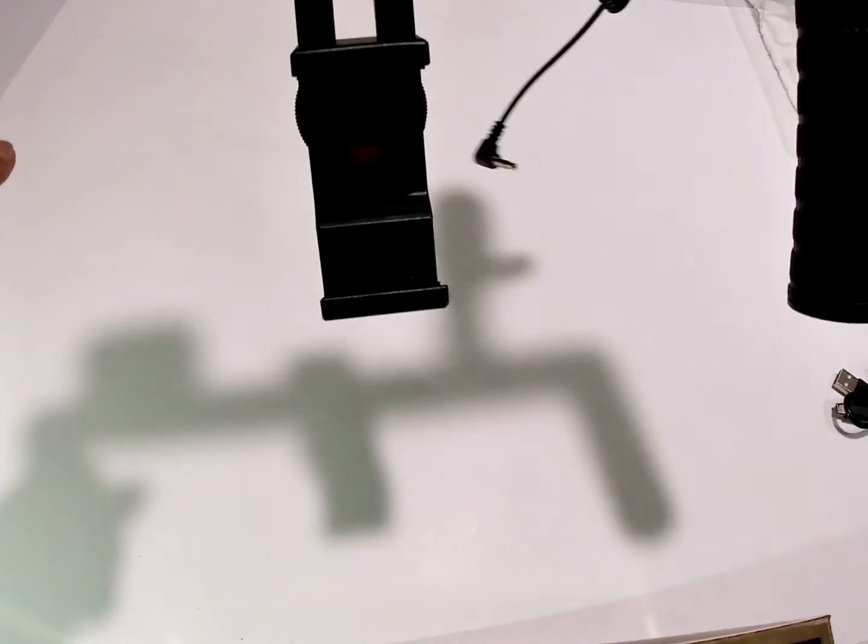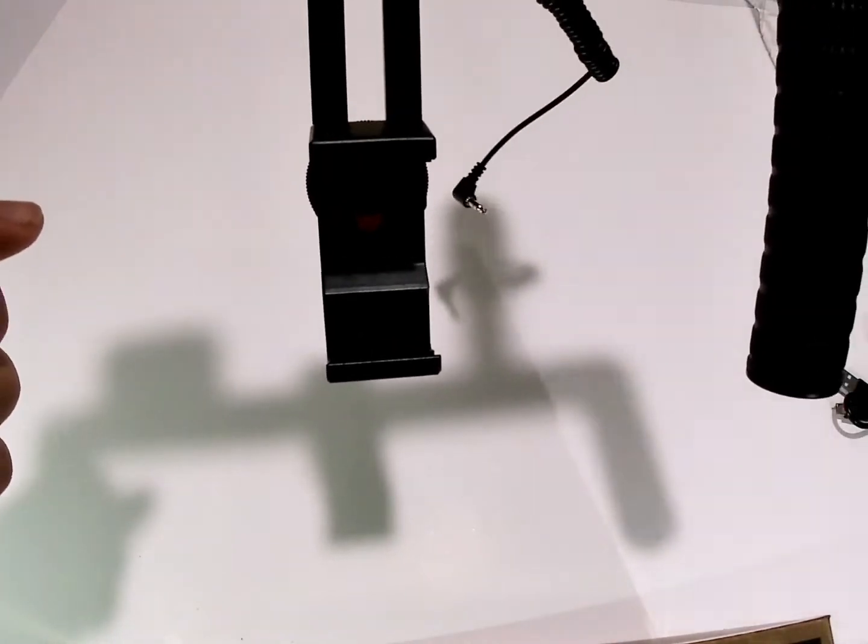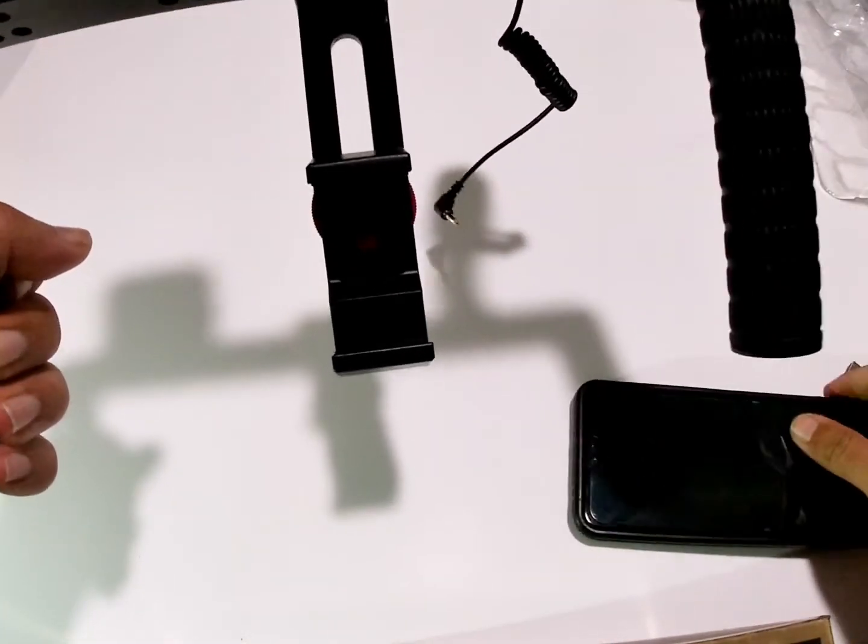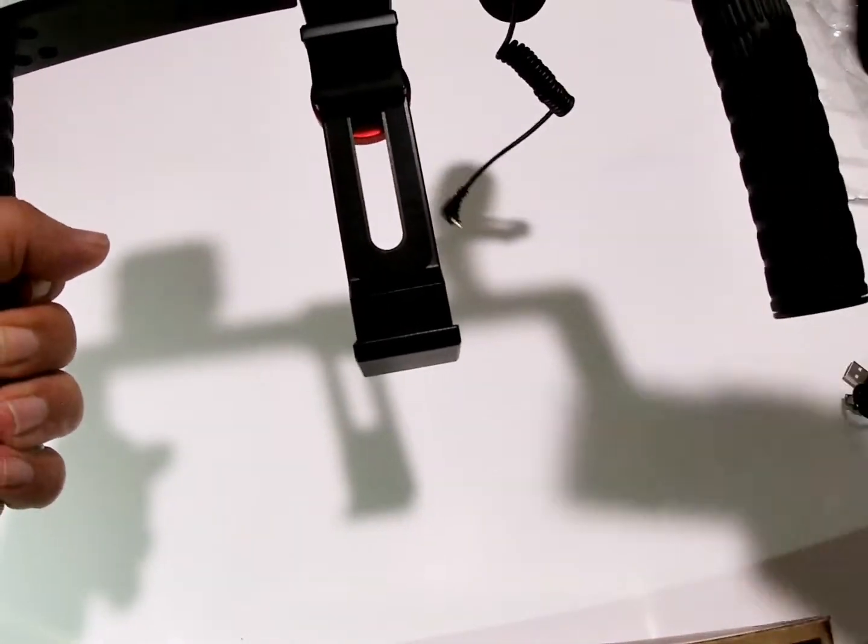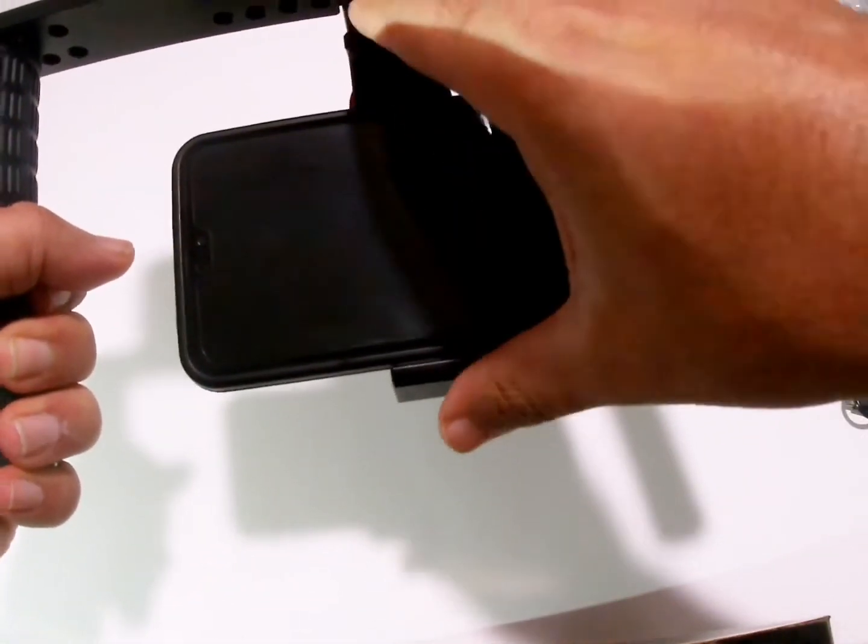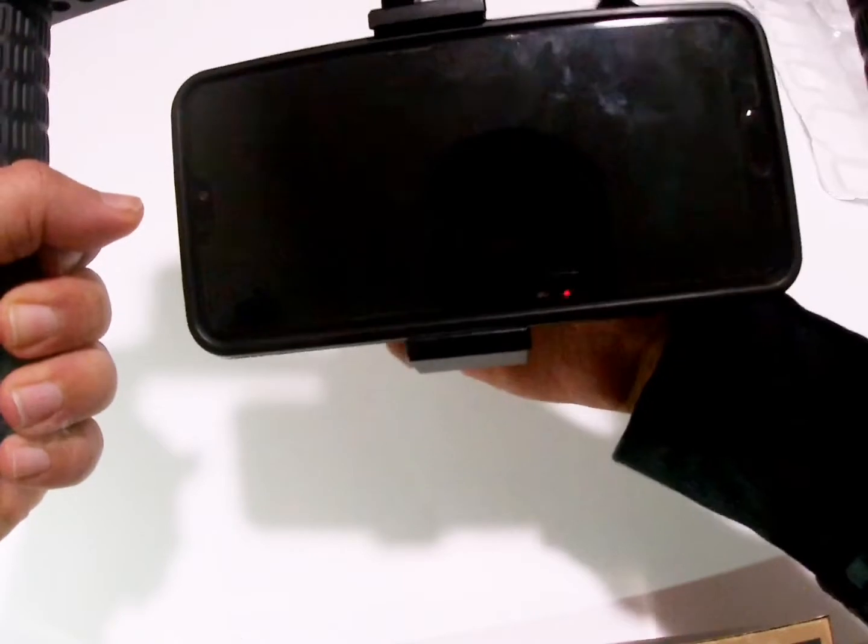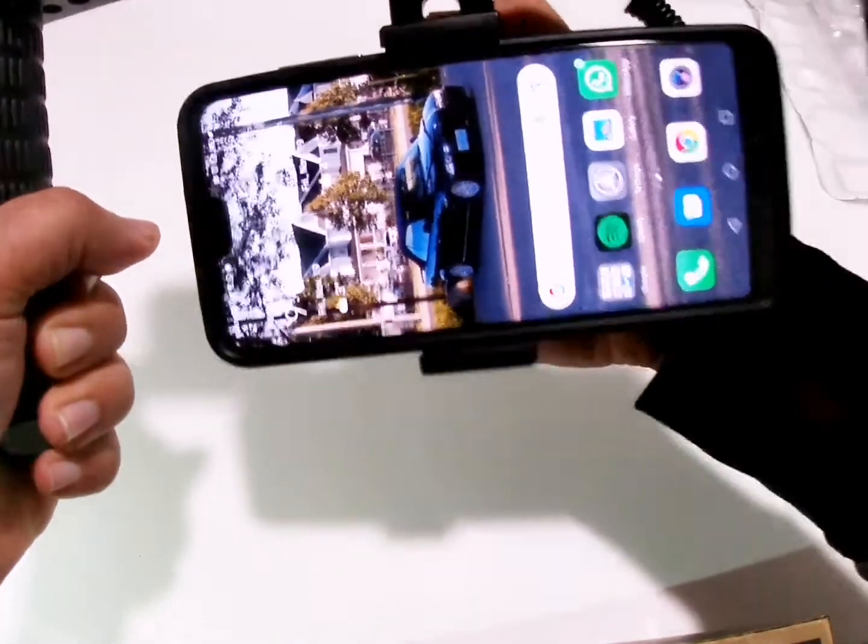For the sake of testing, what we'll do now is actually go ahead and attach my phone. So it seems you just loosen this up, slide the pivot up, slide your phone in, and then drop that down and tighten that up like that. There we go.